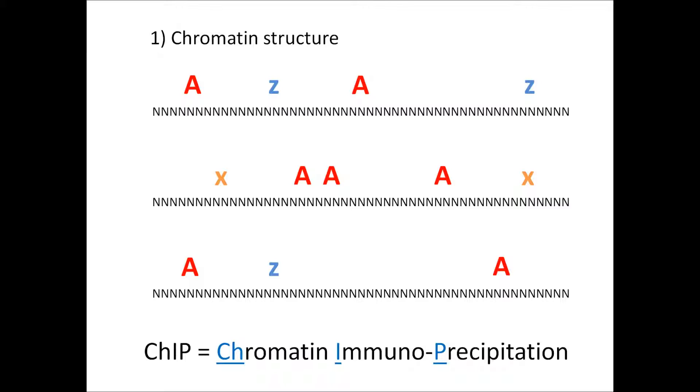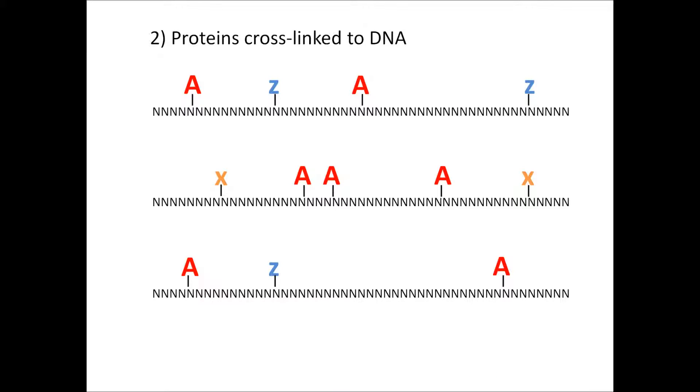We start off with the chromatin, and the chromatin is the DNA represented by all the N's here, and proteins or modifications on that DNA sequence. Here we have A's and Z's and X's, which represent different proteins, and what we're interested in is the A protein. The first step is to cross-link the protein to the DNA, so you kind of capture in space and time what that chromatin looked like when you took your cell sample. Typically formaldehyde is used for this process.